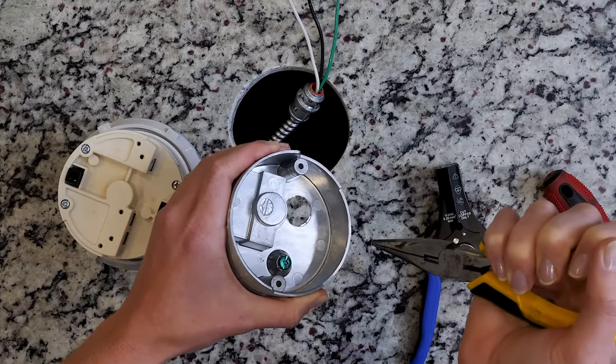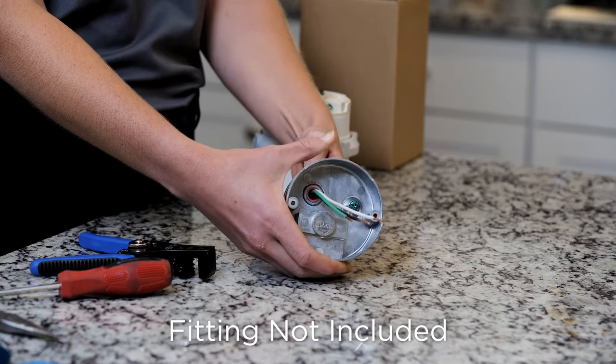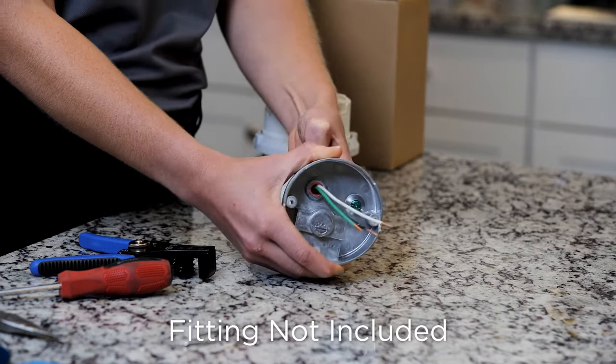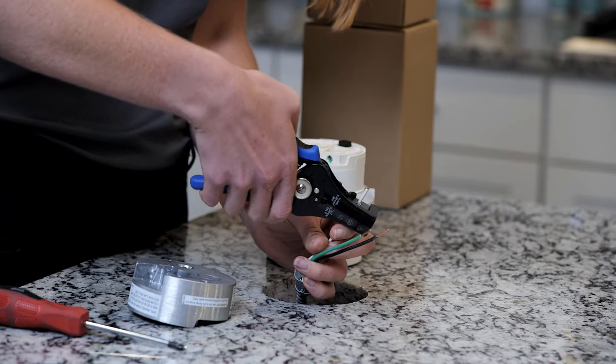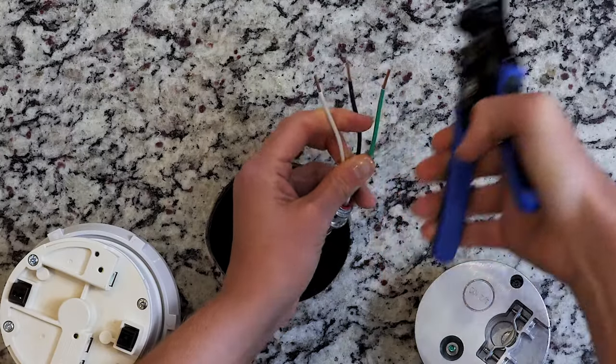Carefully knock out the poke through. Fasten the metal jacket to the device base. A fitting will be required. Strip conductors to the correct length, as shown on the device.